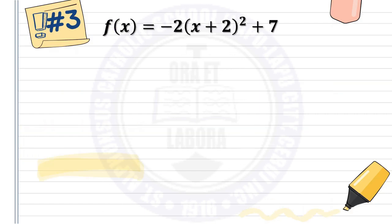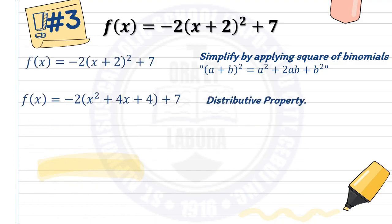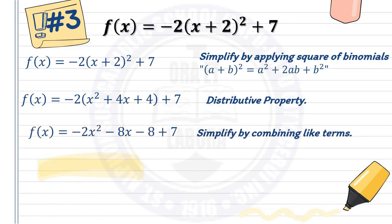Number 3: f of x equals negative 2 times quantity x plus 2 squared plus 7. Applying the square of binomials gives x squared plus 4x plus 4. Using the distributive property, distribute negative 2 to get f of x equals negative 2x squared minus 8x minus 8 plus 7. Combining like terms, the general form is f of x equals negative 2x squared minus 8x minus 1.